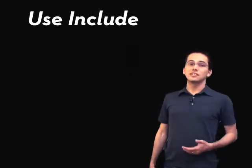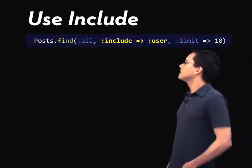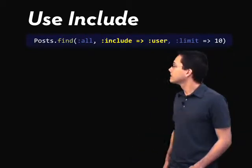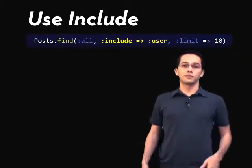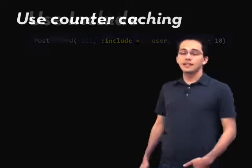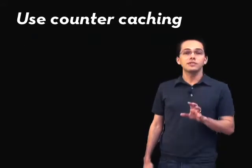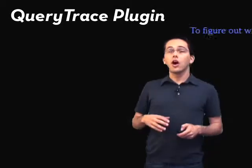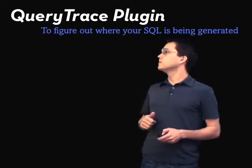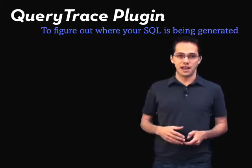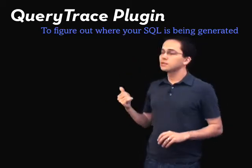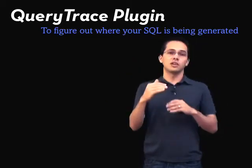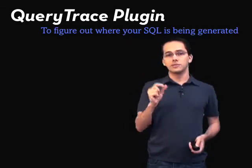Second, don't forget to use include. In this case, if we did Post.find_all include: user, it would not only return the last 10 posts, but also all of the users who wrote those posts — probably the authors. Next up, use counter caching — I'm not going to go into exactly how to do this, but it's something you might want to look into. Also, the query trace plugin is useful for figuring out where the SQL is being generated from in your app. Once you install the plugin, it'll give you in your log the exact line of code where that query is being generated.